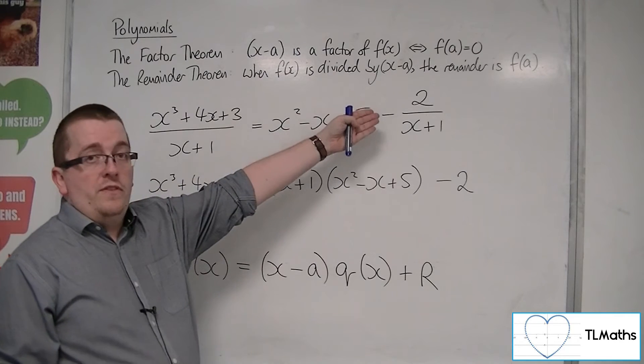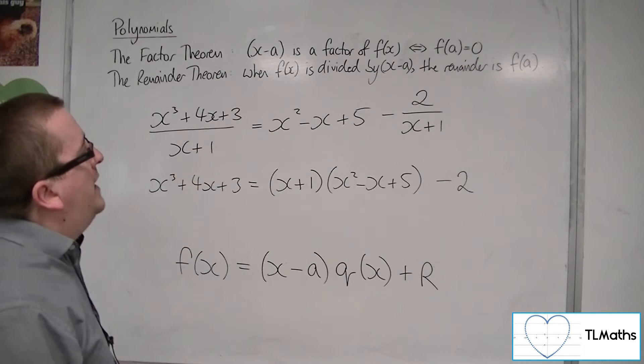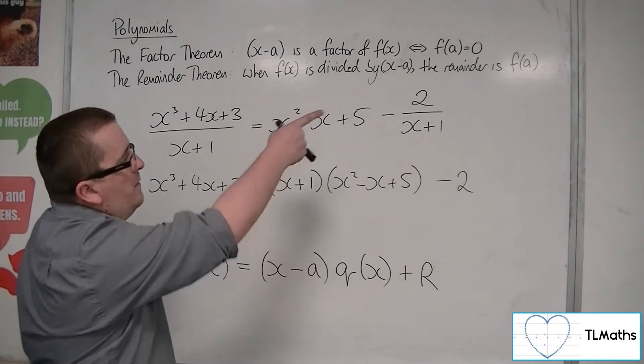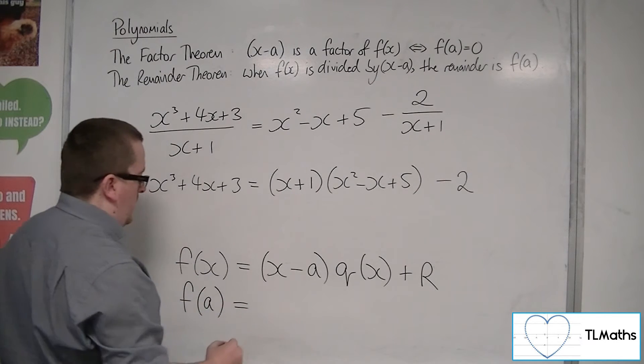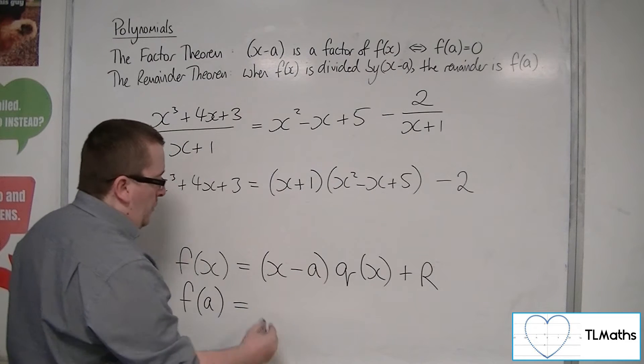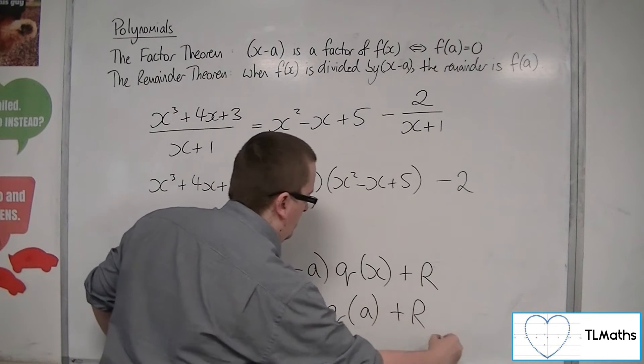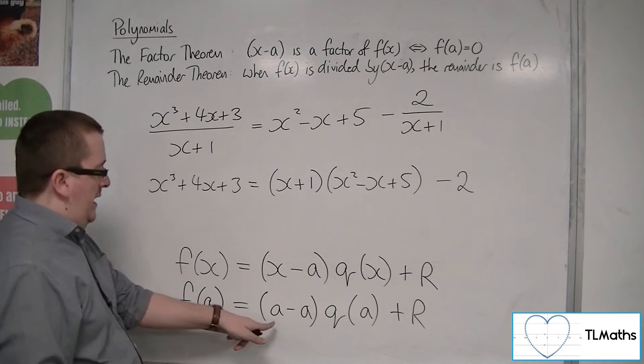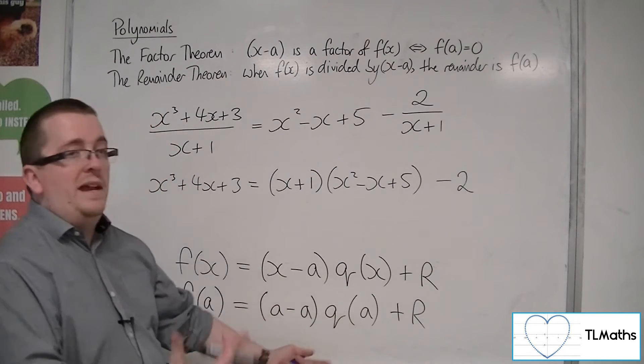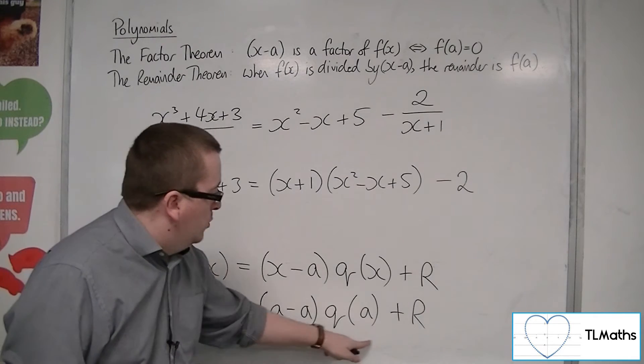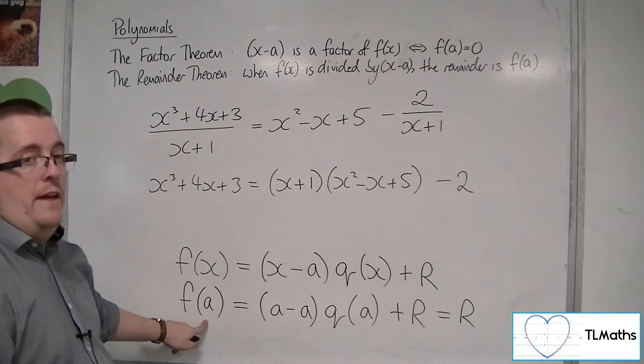So let's just make sure that that's right. Because what we're saying is that when f of x is divided by x minus a, the remainder is f of a. So if I work out what f of a is, so f of a is equal to, well, replacing the x with a, I get a minus a, q of a plus r. So clearly, a minus a is just going to be 0. So you get 0 times q of a. So q of a could be anything you like, but this is all going to be 0. And you just get left with r. So I'm saying that the remainder is just f of a.